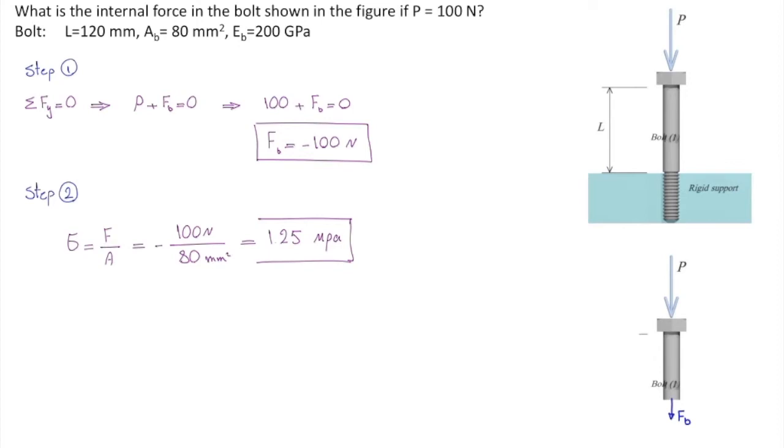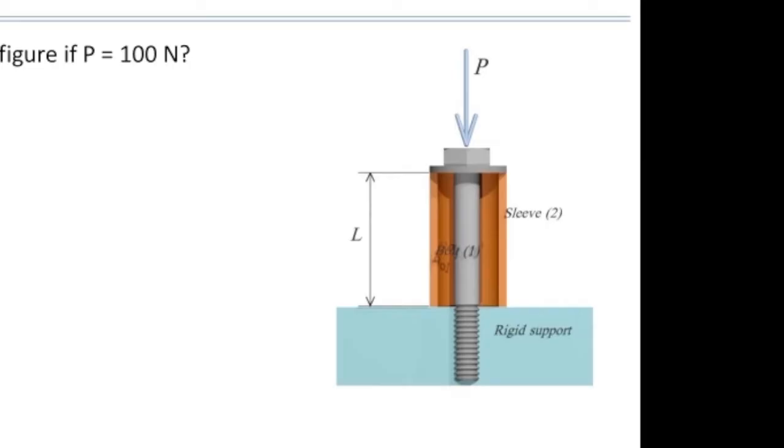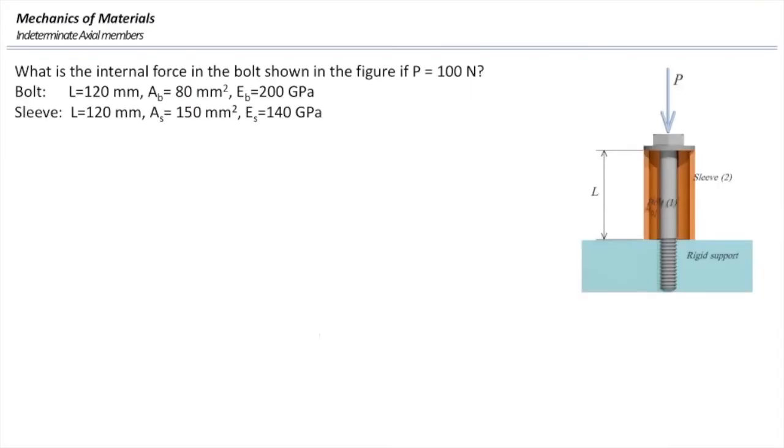Now, let me change this problem a little bit. Instead of having just one bolt, I'm going to add one sleeve around that bolt. In this case, we assume that there is a washer on top that connects that bolt to that sleeve. And we want to determine the stress in the bolt and also the stress in the sleeve. The procedure would be exactly the same. We need to determine the forces in these elements. Also, we need to determine the areas. Areas are provided, so that's easy. But, how can I determine force? Again, I'm going to start with free body diagram.